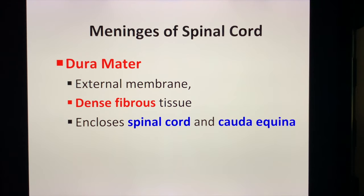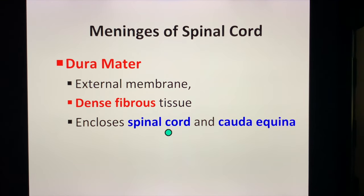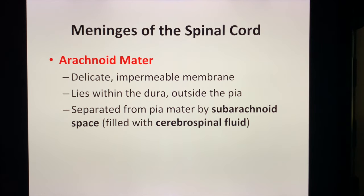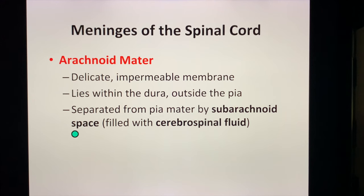There are three meninges of the spinal cord: the dura mater, the pia mater, and the arachnoid mater. The dura mater is the external meninges of the spinal cord — an external membrane comprised of dense fibrous tissue. The dura mater will enclose the spinal cord and the cauda equina. The arachnoid mater is an impermeable, delicate membrane which lies within the dura and outside of the pia.